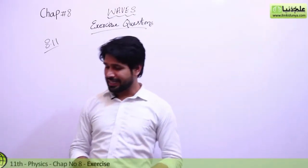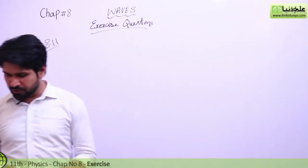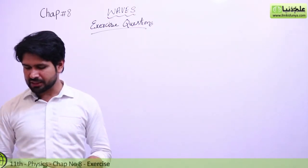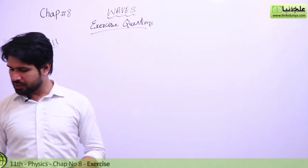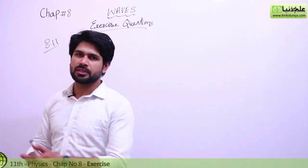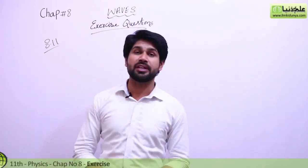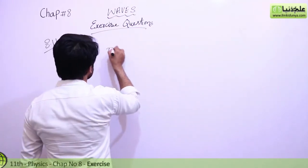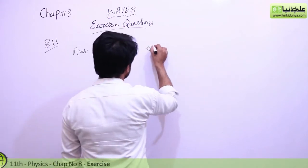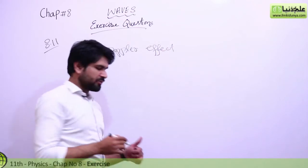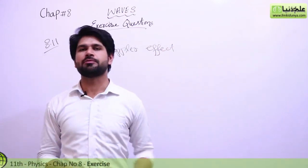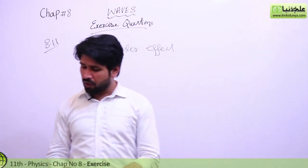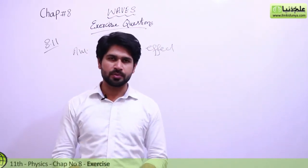Now we are going to discuss next exercise question: how should a sound source move with respect to an observer so that the frequency of its sound does not change? I repeat: how should a sound source move with respect to an observer so that the frequency of its sound does not change? The apparent change in frequency is discussed in Doppler's effect, which discusses the apparent change in frequency depending upon the relative motion of the source and observer.